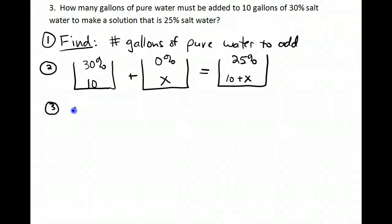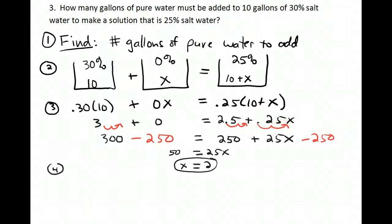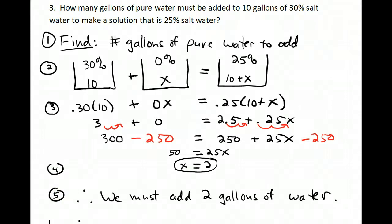Multiply my buckets: I get 0.30 times 10 plus 0 times x equals 0.25 times 10 plus x, and I'll solve that. When I solve this, I get x equals 2. That means I need to add 2 gallons of the pure water to the 30% salt water. So now I can write my conclusion: Therefore, we must add 2 gallons of water.